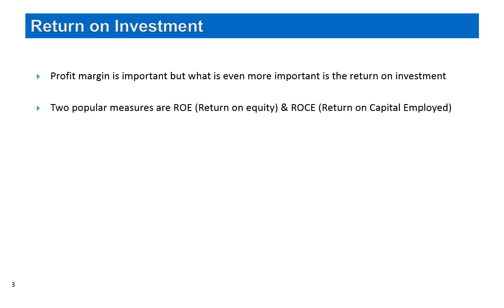There are two popular measures for this purpose. One is ROE, which is return on equity, and another is ROCE — return on capital employed. We have already discussed the concepts of equity and capital employed in earlier videos. ROE or return on equity is defined as net profit, or the bottom line PAT, divided by equity. Equity is not only just the capital but includes other equities such as retained earnings, reserves and surplus, etc. — it is the entire stake of shareholders in the company.